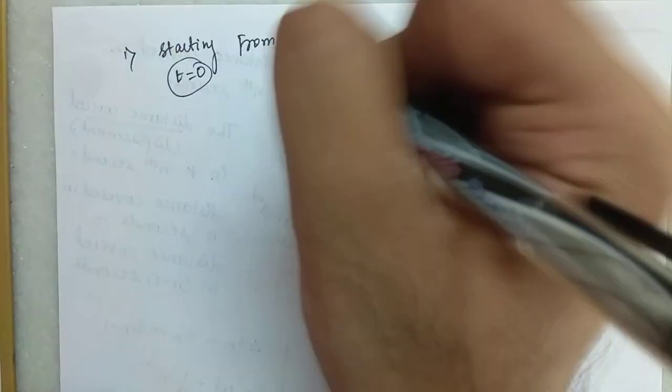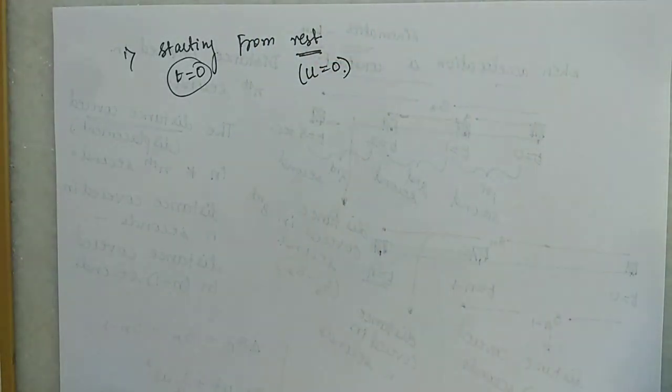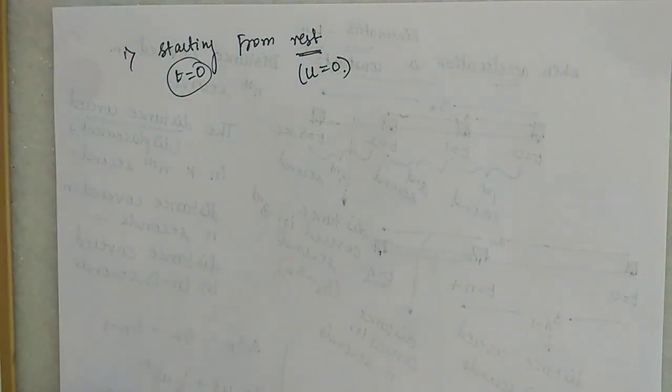Now some basic terms that you will commonly see in other questions. First: 'starting from rest' — when this is given, it means at t = 0 the object is at rest, so the initial velocity u is equal to 0.